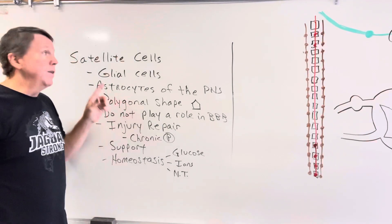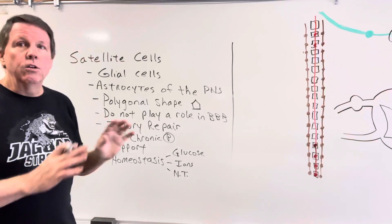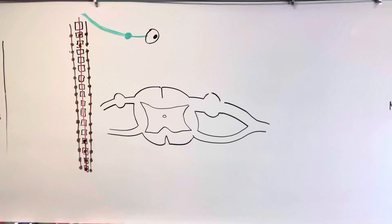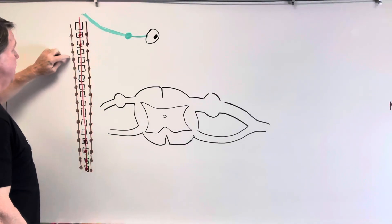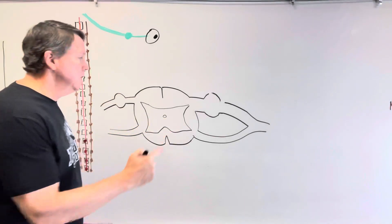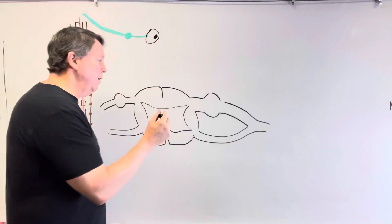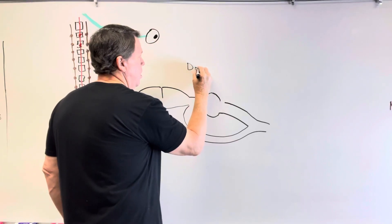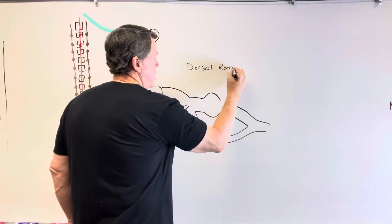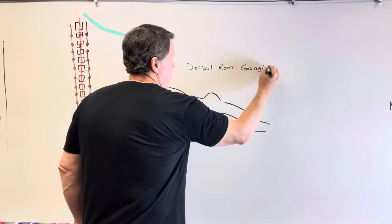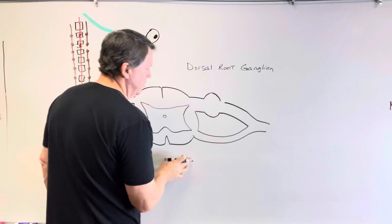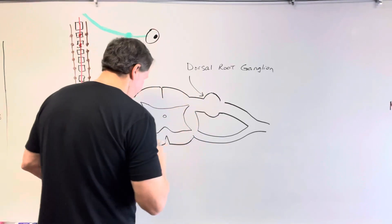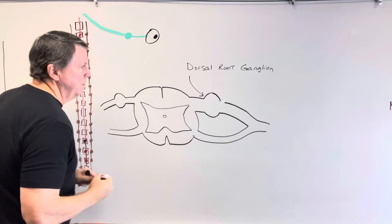So that's a basic rundown of the differences between satellite cells and astrocytes. Let's take a look at the diagram. I have a spinal column here with a spinal cord — we're looking at it from superior to inferior. This right here is going to be my dorsal root ganglion. Since it's dorsal, this is the posterior side and this is the anterior side.